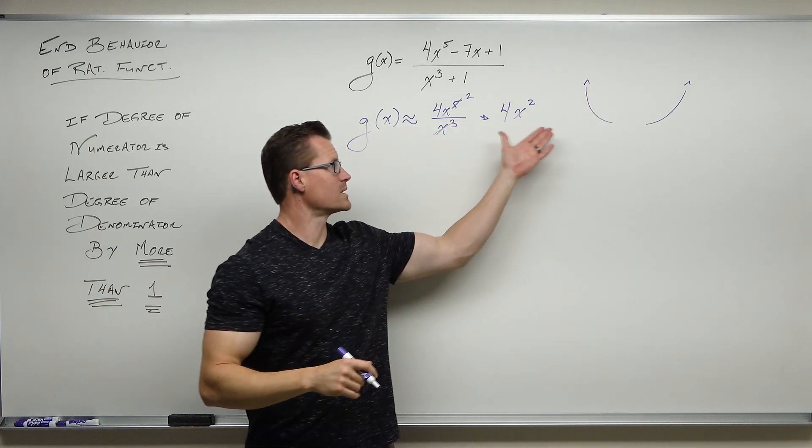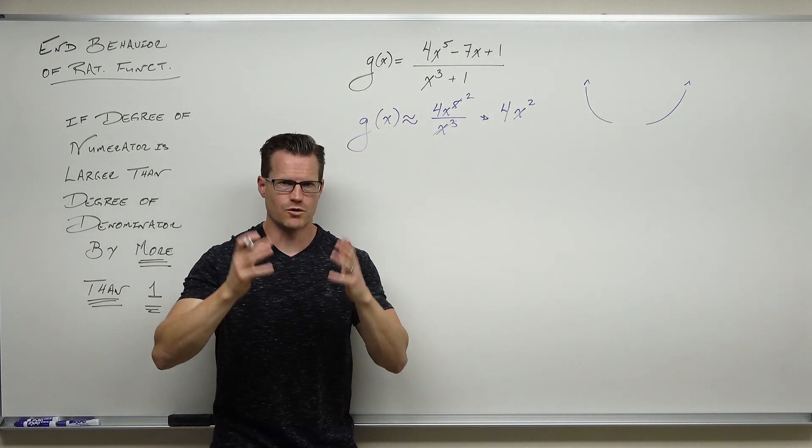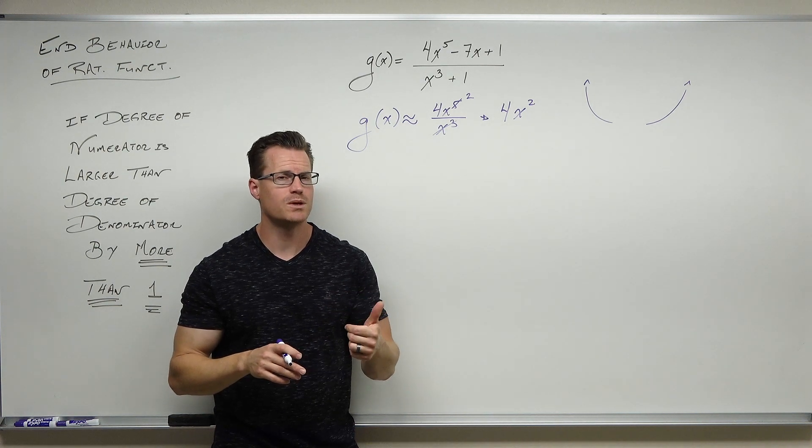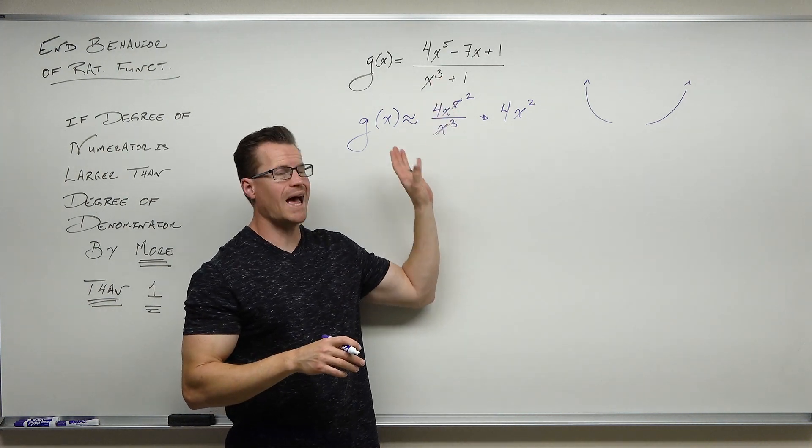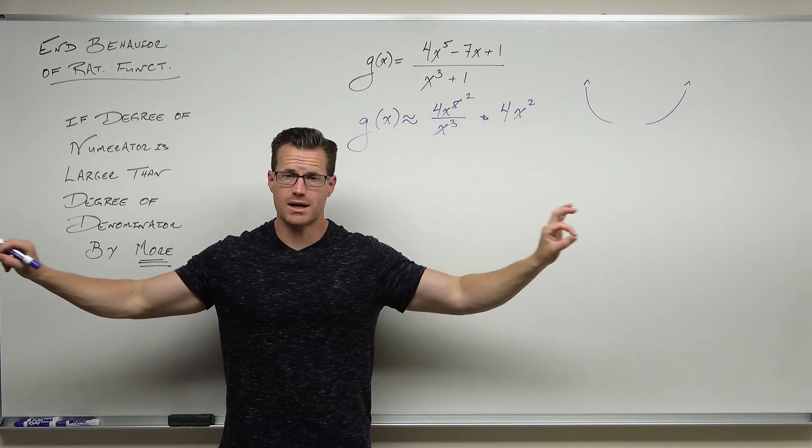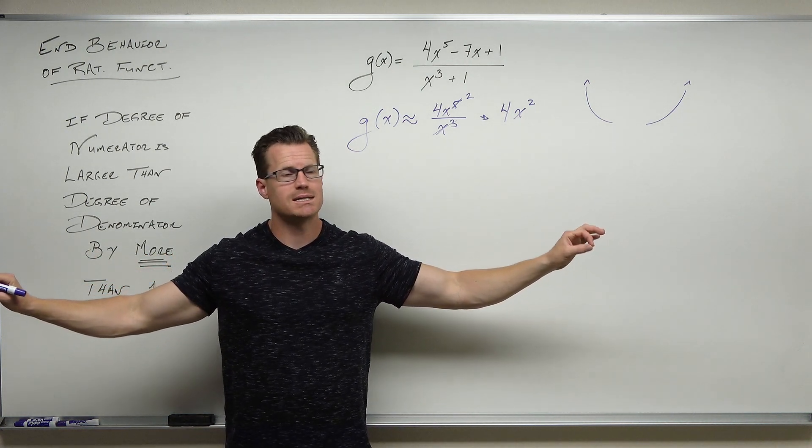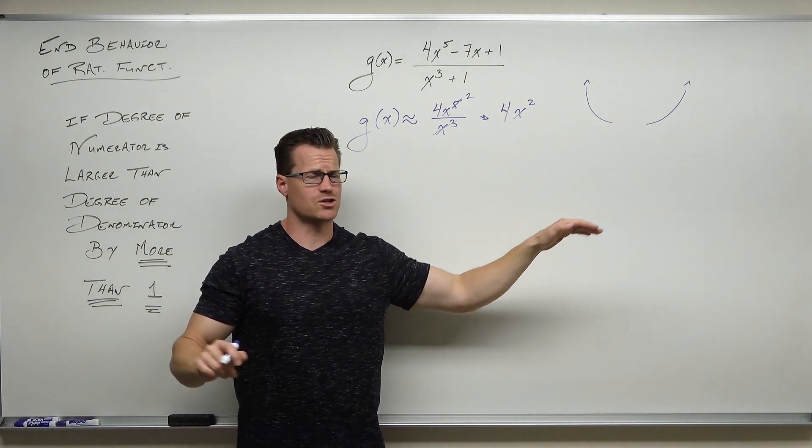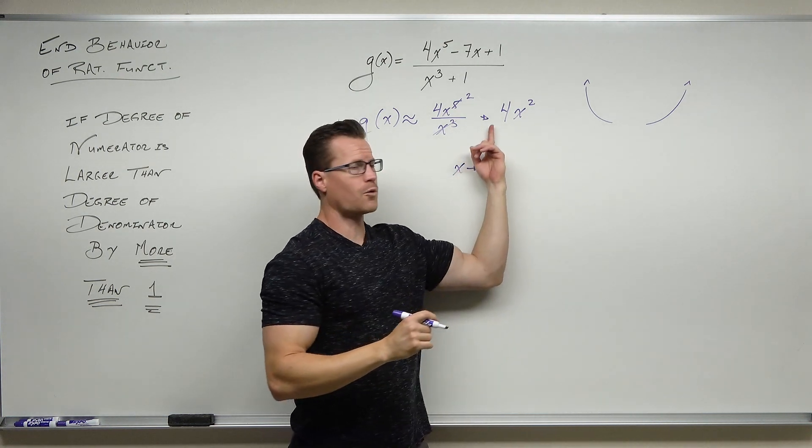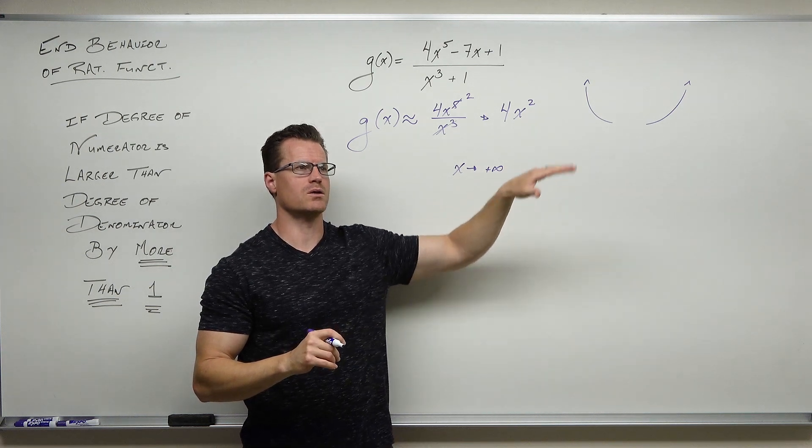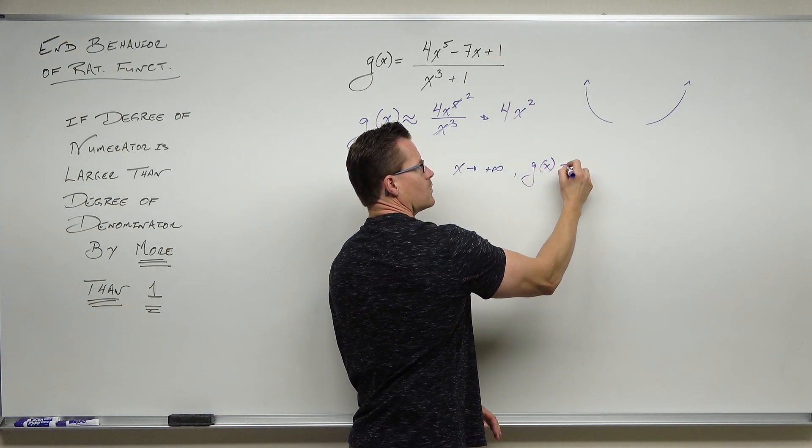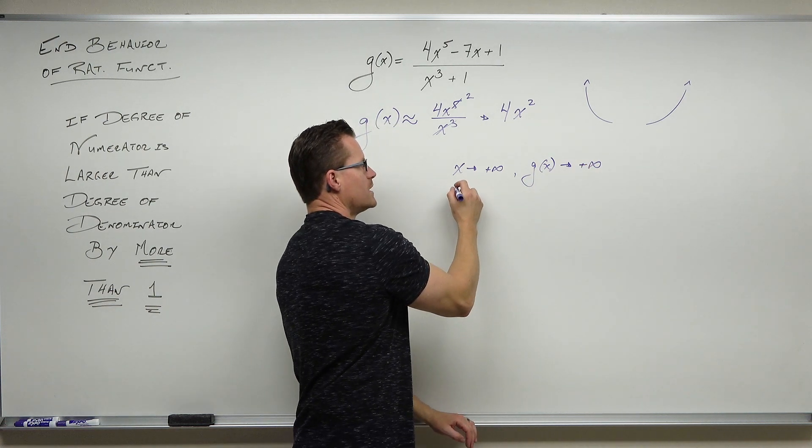Now, of course, we're going to have some things that happen in the middle, like x-intercepts or some vertical asymptotes. But we will not have a horizontal asymptote. We will not have an oblique asymptote. This function will actually be modeled by 4x squared as x approaches positive and negative infinity. You can see it. Take x, make it really large. As x approaches positive infinity, 4 times really big numbers squared are enormous numbers. This function would also approach positive infinity.